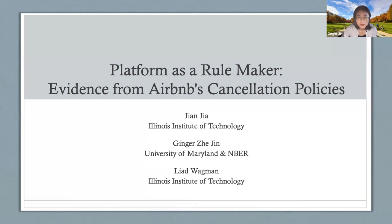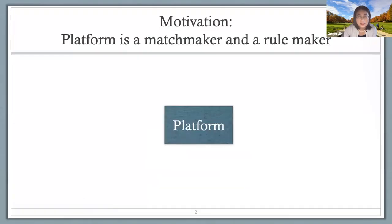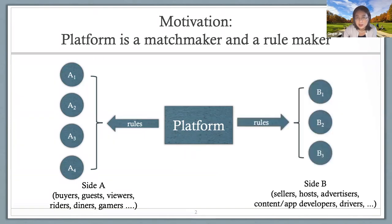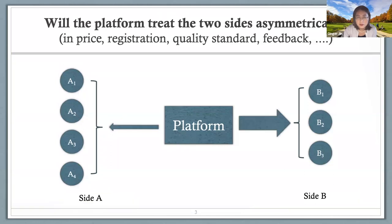We're motivated by the fact that a platform is not only a matchmaker but also a rule maker. Many platforms are multi-sided: on one side they face consumers — buyers, guests, viewers, writers, diners, gamers — and the platform often sets some rules on these players. On the other side, we typically have suppliers: sellers, hosts, advertisers, content creators, app developers, or drivers. It's quite common for most platforms to set different sets of rules on those two sides.